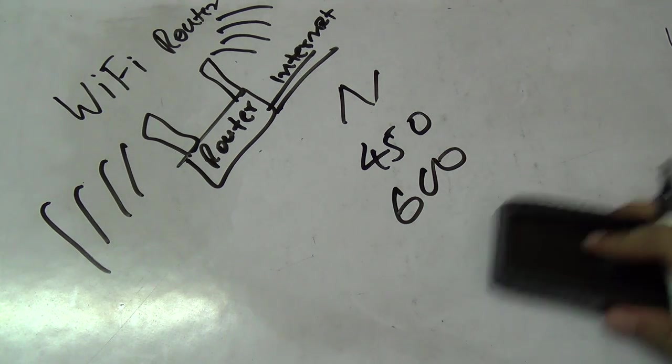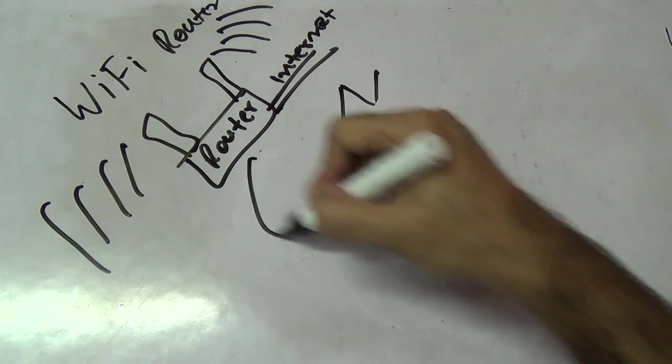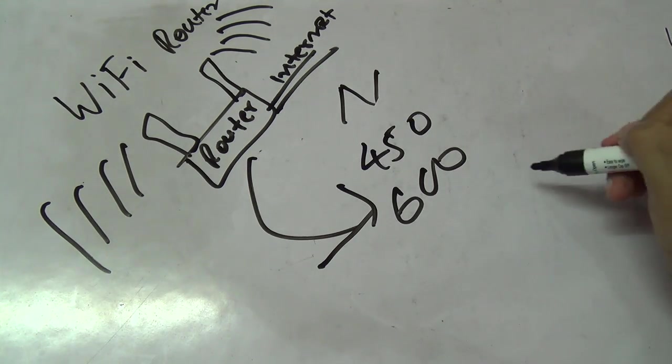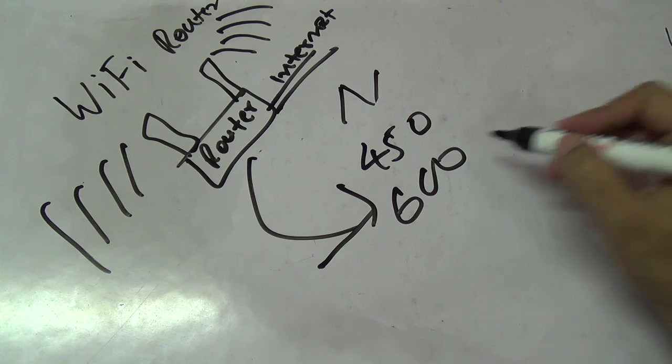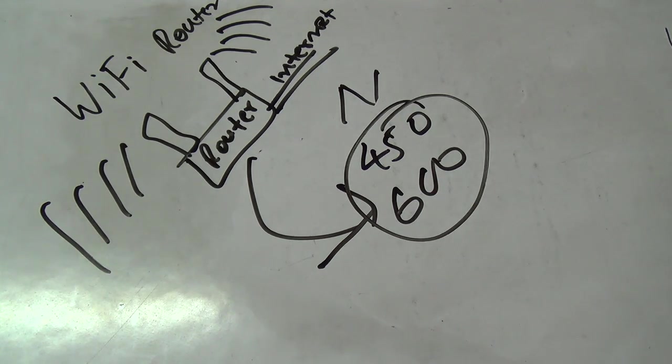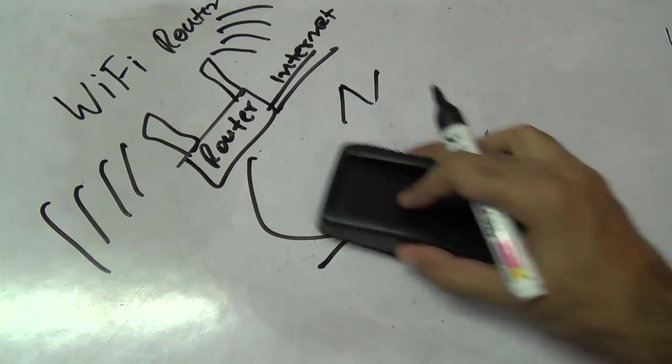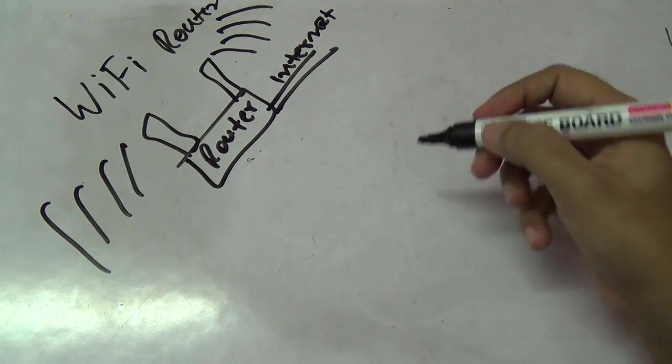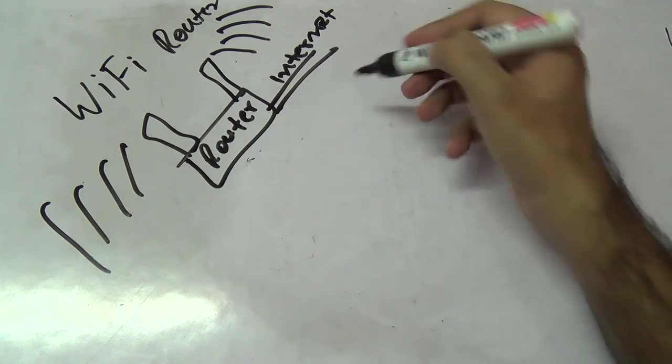The thing is that your router might support these high speeds, but your device that is using it, like a cell phone, also needs to support these high speeds, and that's not very common. So 150 and 300 are pretty common.